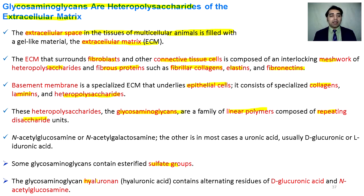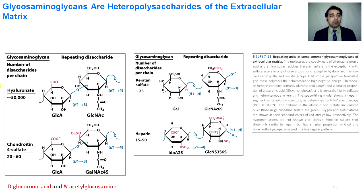Hyaluronan, a glycosaminoglycan, consists of D-glucuronic acid and N-acetylglucosamine. It consists of almost 50,000 repeating disaccharide units. Chondroitin consists of glucuronic acid and 4-sulfate N-acetylgalactosamine. Keratan sulfate consists of almost 25 repeating dimer units composed of galactose and 6-sulfate N-acetylglucosamine.